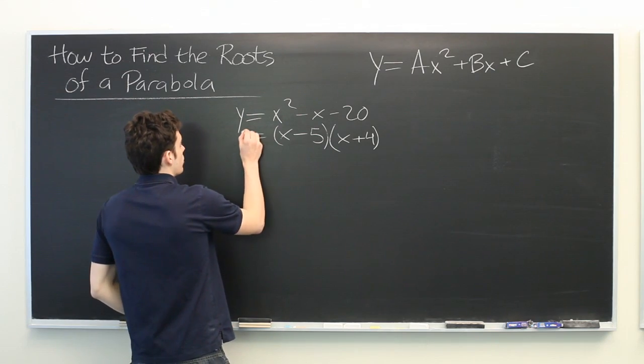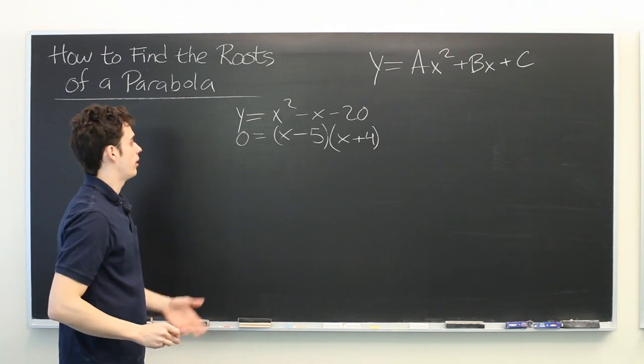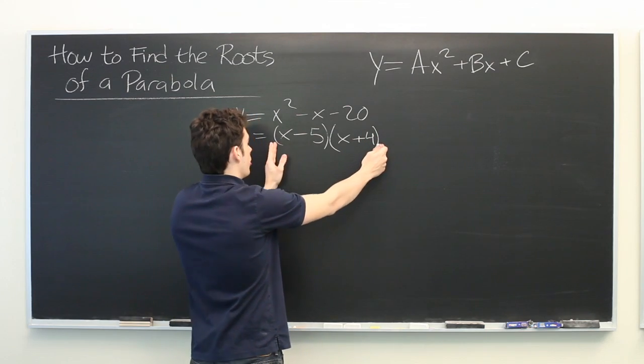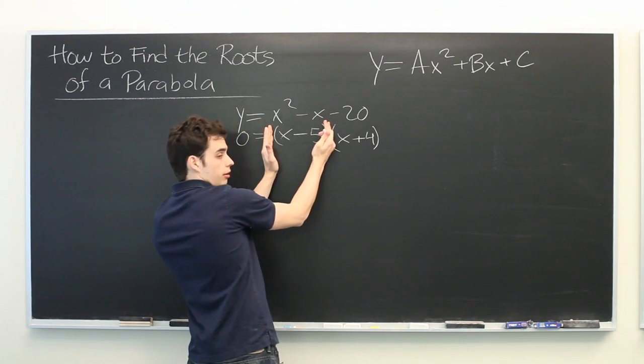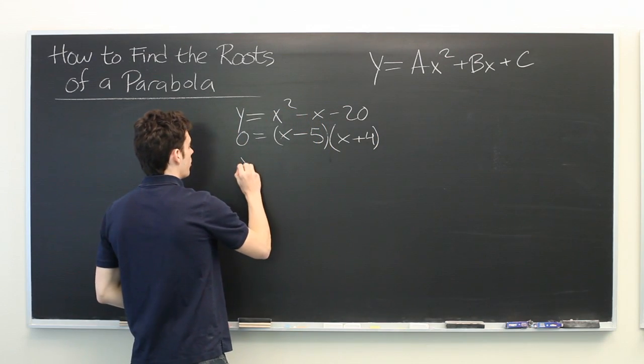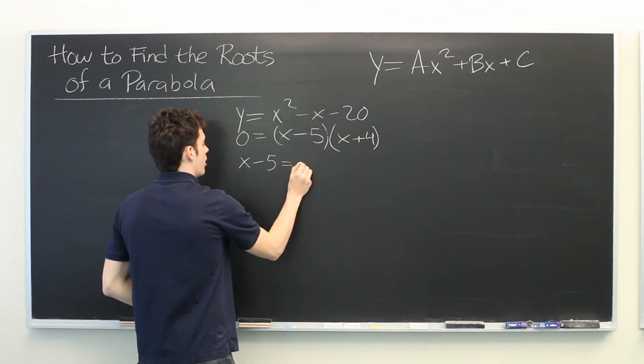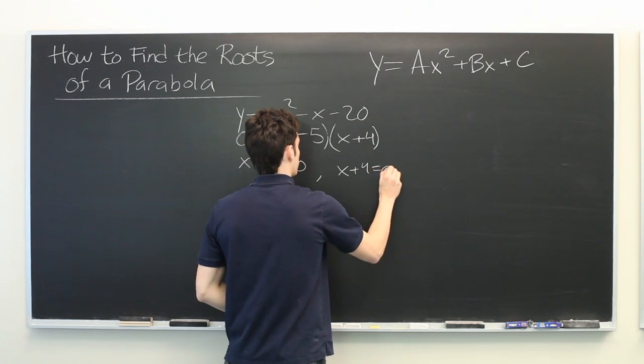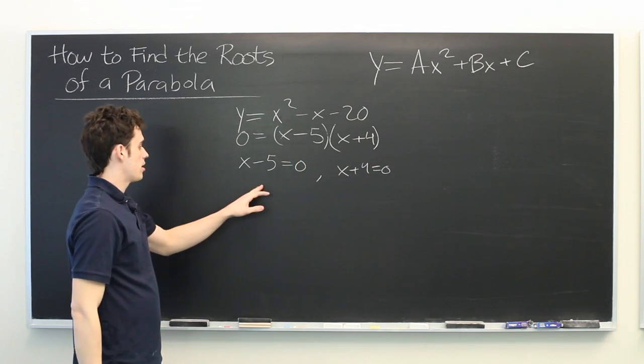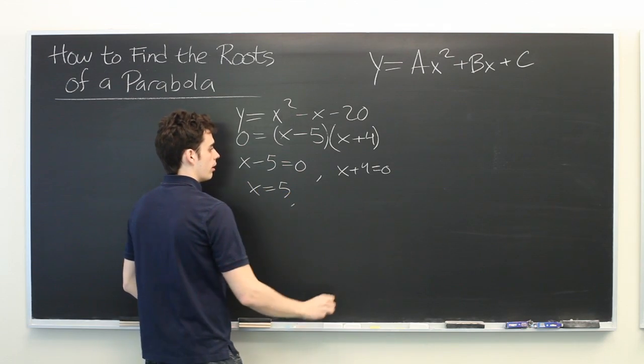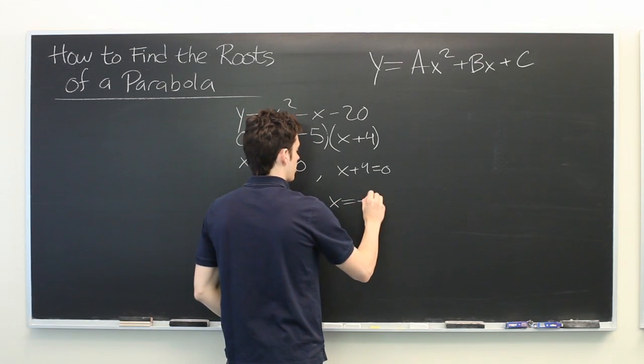So we want to know when this is equal to zero. Well, it helps to notice that this entire expression will be equal to zero if this is equal to zero or if this is equal to zero. So let's write that out. Here we can quickly see that x is equal to five and here x is equal to negative four.